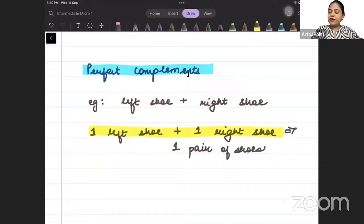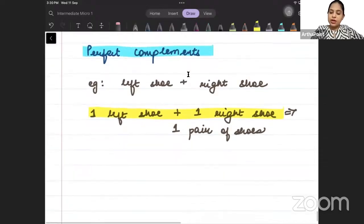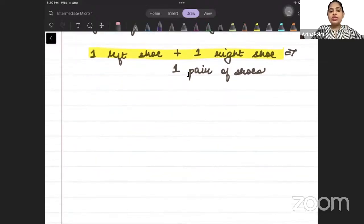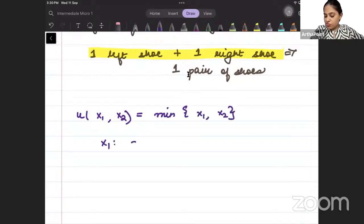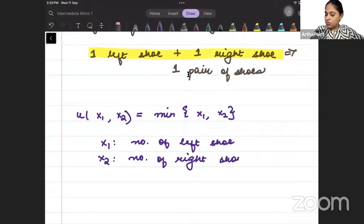Every one left shoe must be matched with every one right shoe. Let us write the utility function of this kind of goods. The utility function for perfectly complementary goods looks like this: min of x1, x2. Suppose x1 represents the number of left shoe. x2 represents the number of right shoe.